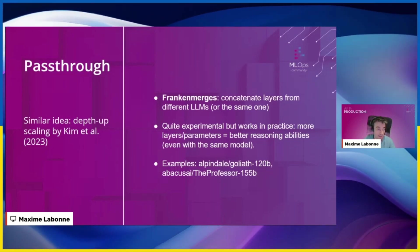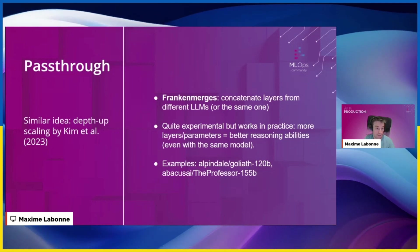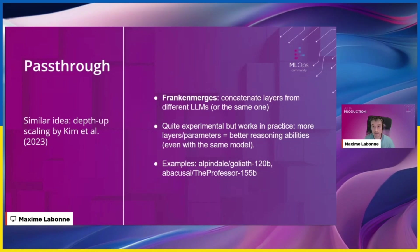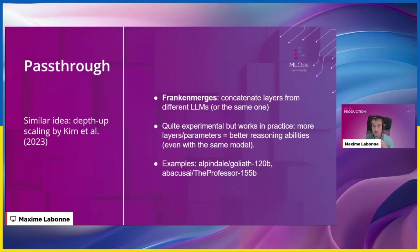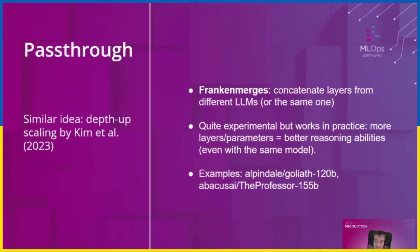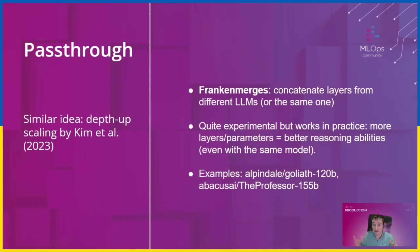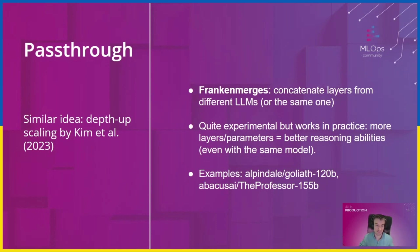Then we have the Passthrough technique, similar to depth-upscaling by Kim et al. that made the Solar model. The idea is to concatenate layers either from different LLMs or from the same LLM — both work. It's quite experimental, but it really works in practice because more layers means more parameters, and it's been shown repeatedly that you get better reasoning abilities. These Franken-merges can answer questions the original models could not. People tend to make very large models with this — 120B models, and Eric Hartford's 'The Professor' with 155B parameters. The downside is you need at least a 3090 or 4090 to run them.